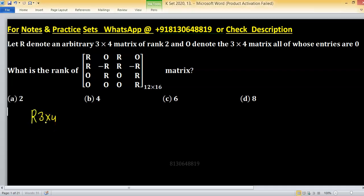Let R denote a 3 cross 4 matrix of rank 2, and O denotes a 3 cross 4 matrix where all entries are 0.